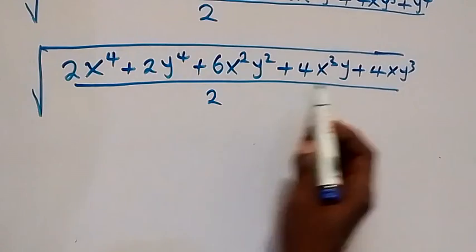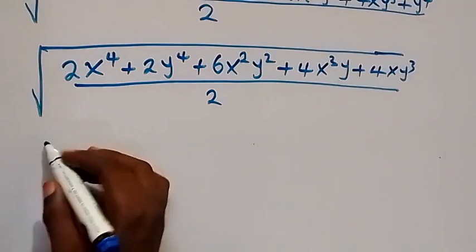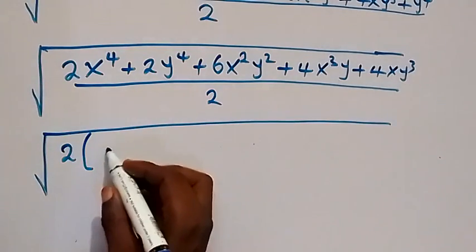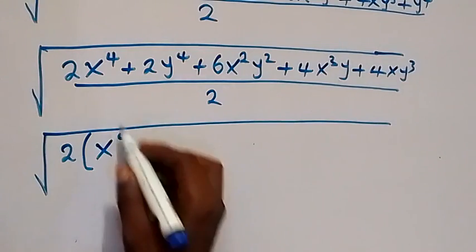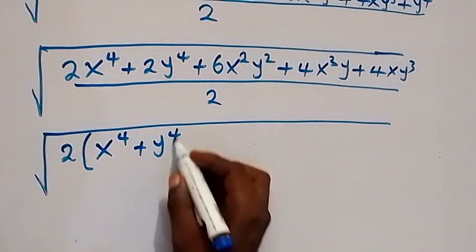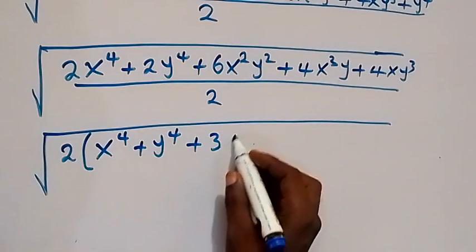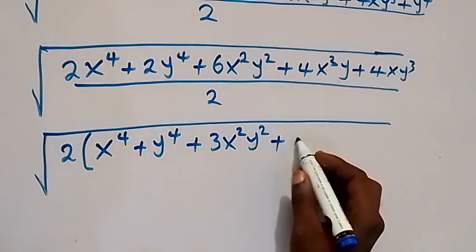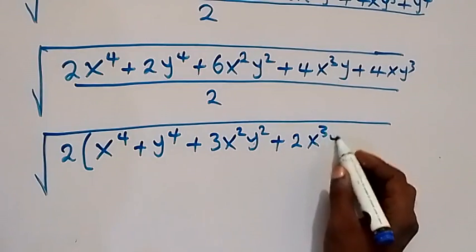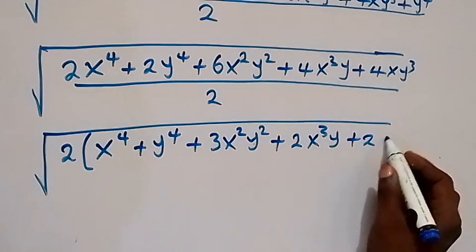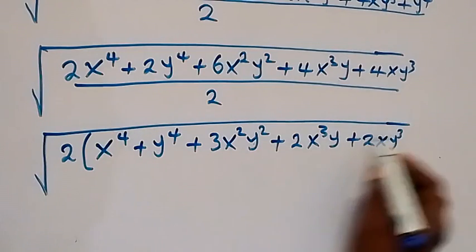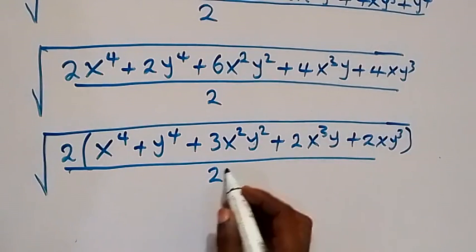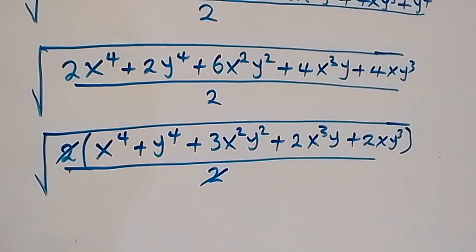From here we factor 2 out of the expression, giving square root of 2 times (x⁴ plus y⁴ plus 3x²y² plus 2x³y plus 2xy³), divided by 2. The 2s cancel.